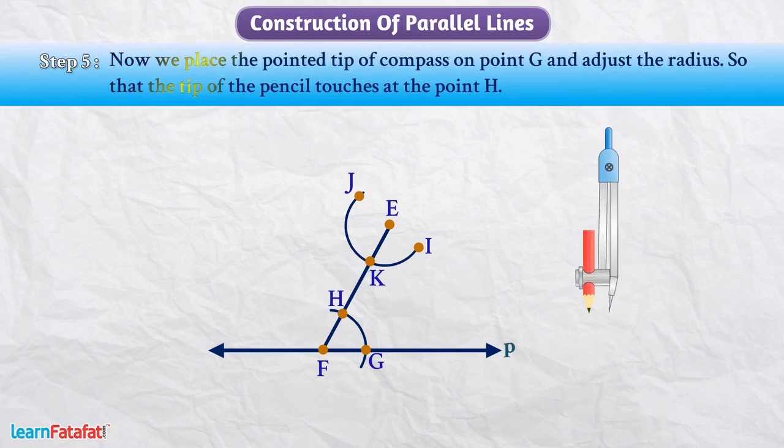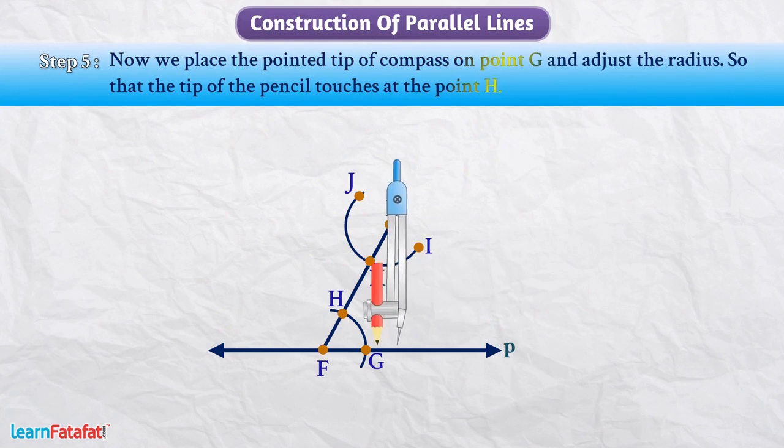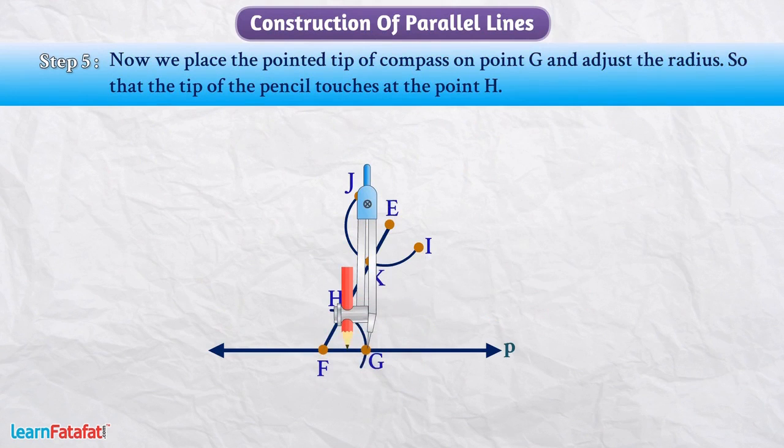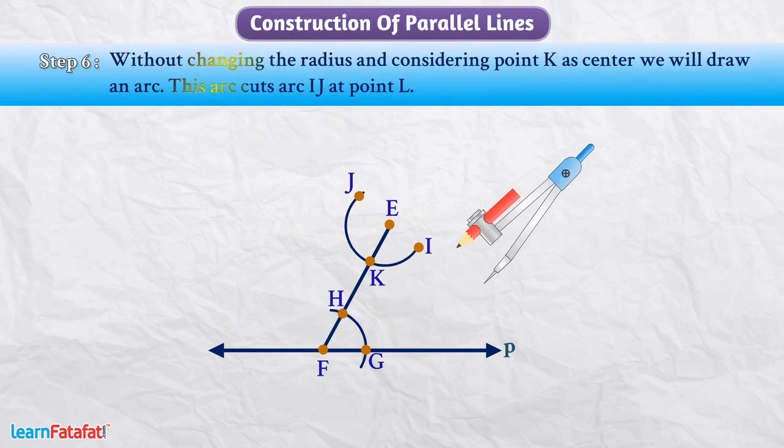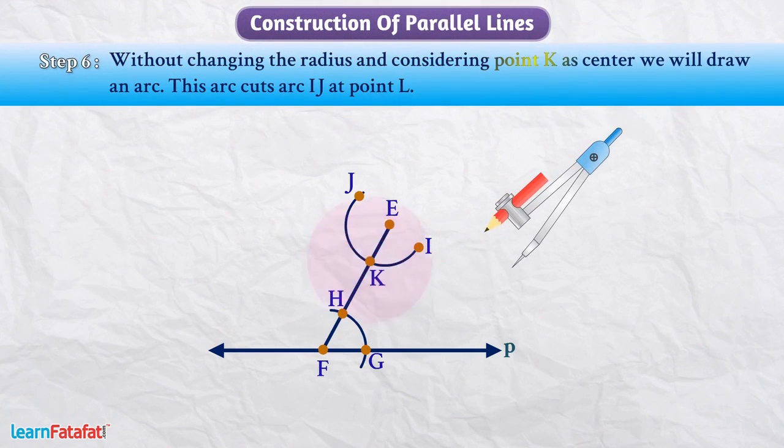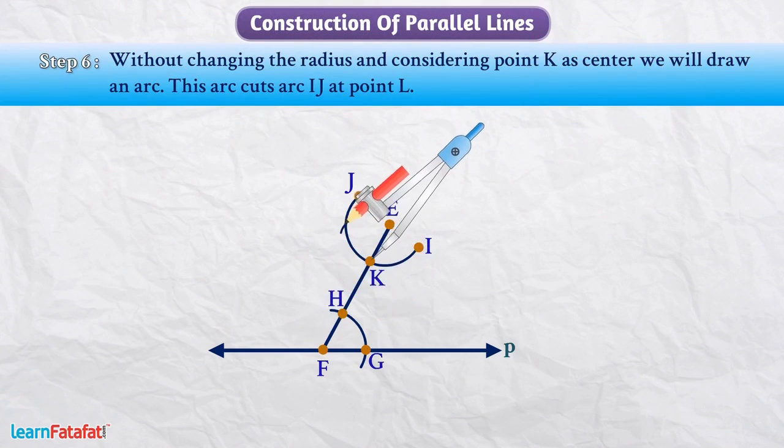Now, we place the pointed tip of the compass on point G and adjust the radius so that the tip of pencil touches at point H. Without changing the radius and considering point K as center, we will draw an arc. This arc cuts arc IJ at point L.